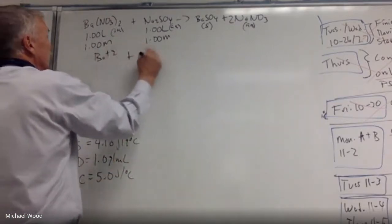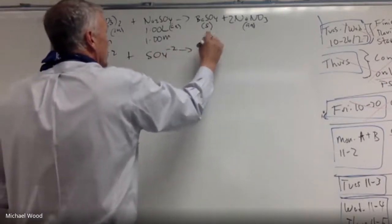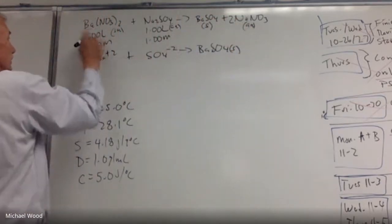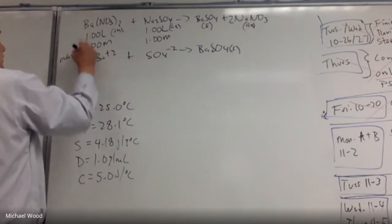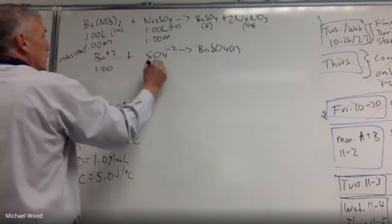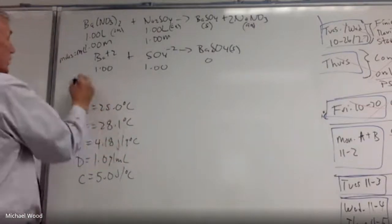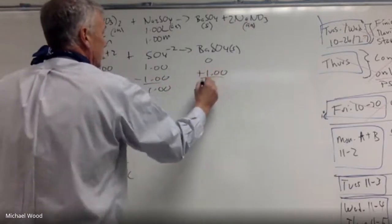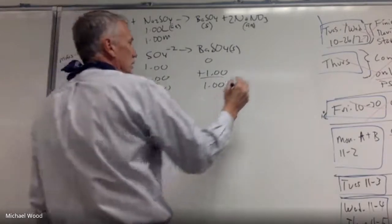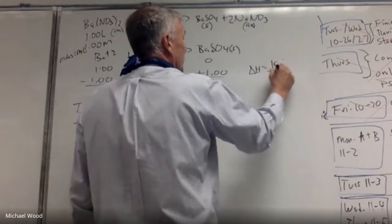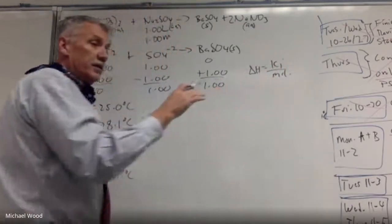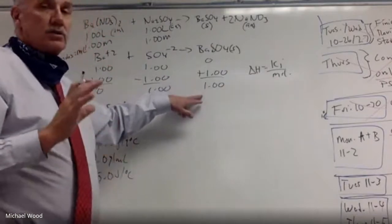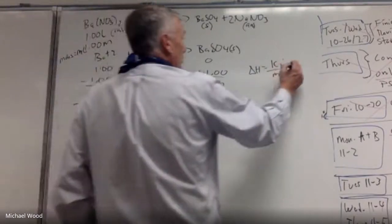So here I'm going to have barium²⁺ plus sulfate²⁻ gives barium sulfate solid — that's the net ionic equation. I took out the sodium and the nitrate spectator ions. For moles, moles = molarity × liters. I have one molar times one liter, so one mole of each. Both are spectator ions removed, and I define moles in terms of the moles of product formed in the net ionic equation.